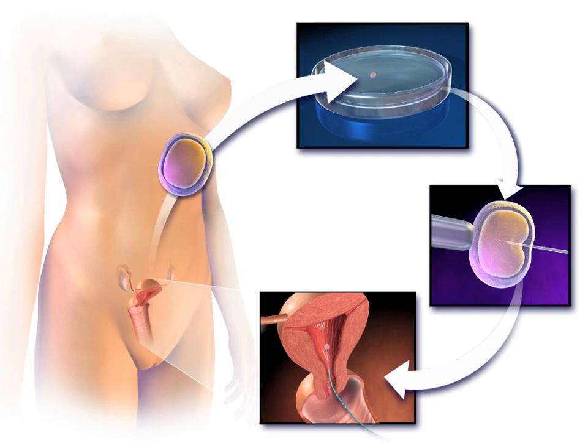In general, ART procedures involve surgically removing eggs from a woman's ovaries, combining them with sperm in the laboratory, and returning them to the woman's body or donating them to another woman. According to CDC, they do not include treatments in which only sperm are handled, i.e., intrauterine or artificial insemination, or procedures in which a woman takes medicine only to stimulate egg production without the intention of having eggs retrieved.